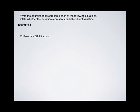Example 4. Coffee costs $1.79 a cup. Write an equation to represent this situation. Don't forget to declare your variables, and state whether the equation represents partial or direct variation.